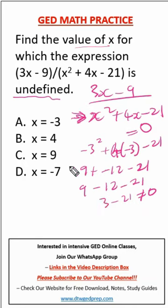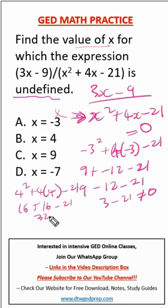Let's test 4. We have 4² + 4(4) - 21. This gives me 16 plus another 16 minus 21, that's 32 minus 21, which would not give us zero. So this option is wrong.